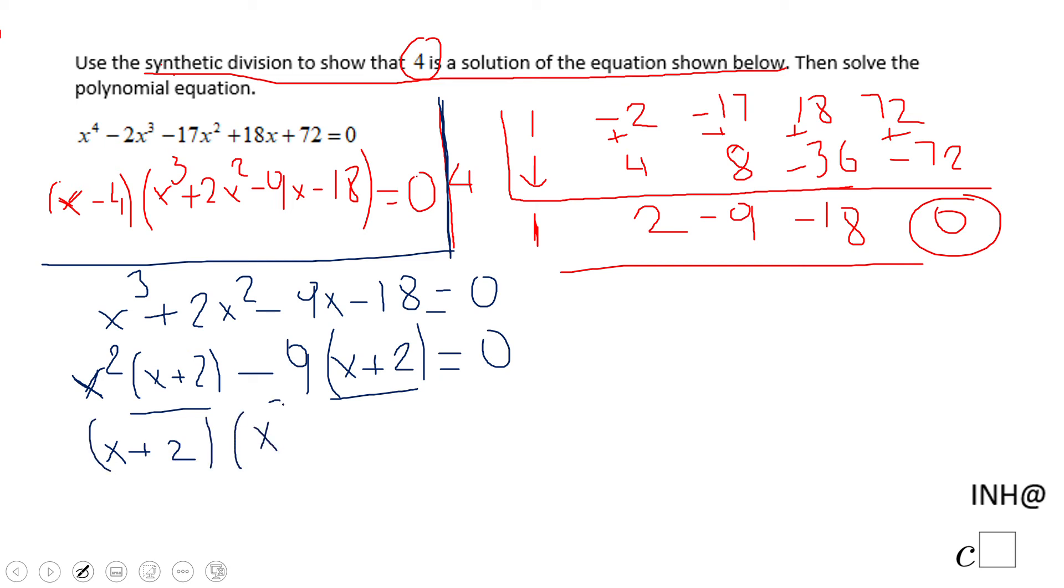And we're going to have (x + 2) and x^2 minus 9 is the difference of squares: (x - 3)(x + 3) equals 0.